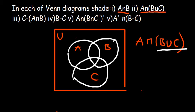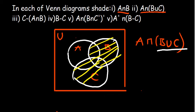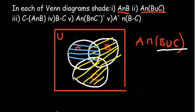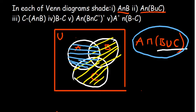Shading B union C requires us to shade the entire region of B, then also shade the region that is part of C — that's what it means when you say union of B and C. Now we have our B union C. So we need to find the intersection with A. I'll use a different color — blue — so that we can see where they are going to be intersecting. If you shade A, this is A.